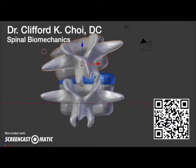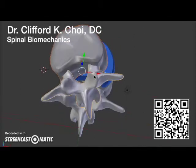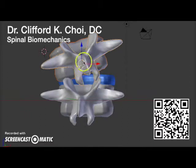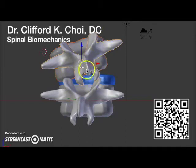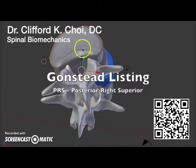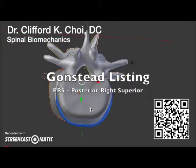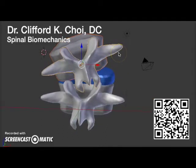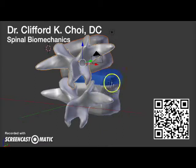Dr. Gonstead was an engineer, and he called this a posterior-right-superior listing. That is how we describe this spinous process and vertebra in relation to the one below — it's posterior, turned to the right with the spinous on the right, and it's superior here. The reason why that's important is because this side would show a wedge on the x-ray.